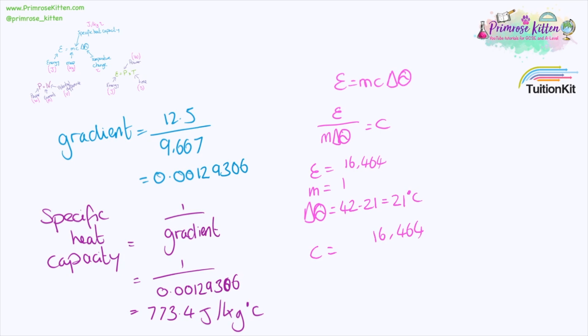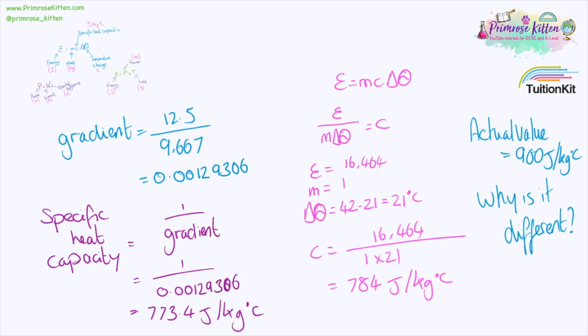Popping those numbers into the equation. And by calculations we get a value of 784 joules per kilogram degree C. Different but actually pretty close to my experimental value. Now the actual value for this is 900 joules per kilogram degree C. You would never expect to get the actual value in an experiment. But you need to think about why it is different.